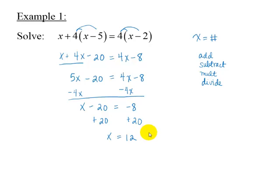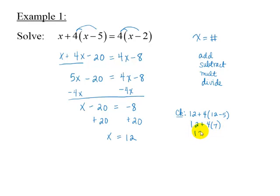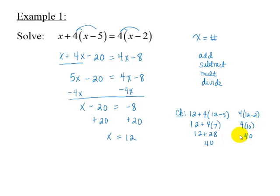We can check by replacing x with 12 in the original equation. That gives us 12 plus 4 times 12 minus 5, or 12 plus 4 times 7, which is equal to 12 plus 28 or 40 on the left. The right side is 4 times 12 minus 2, or 4 times 10, which equals 40. Because the left and right sides agree at x equals 12, the solution set is the set containing 12.